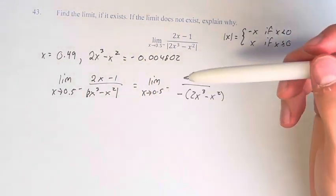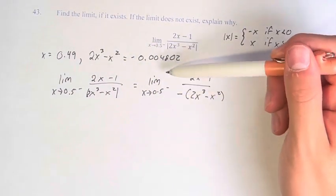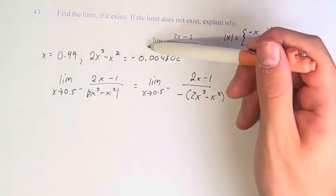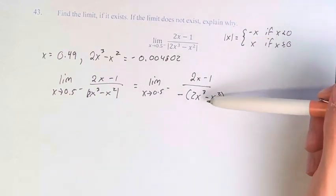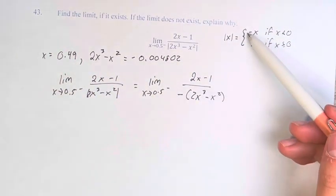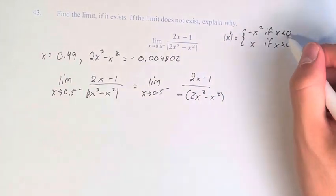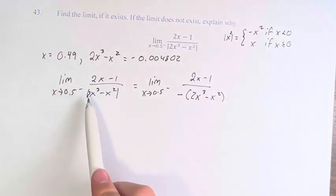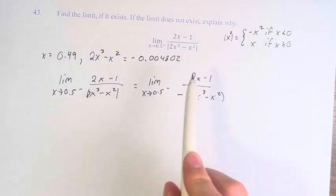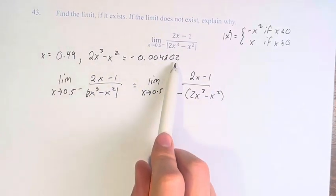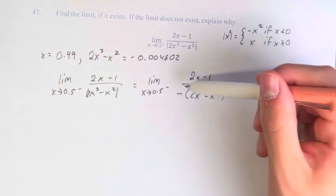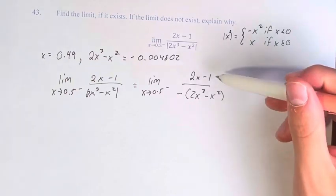If we are approaching from values less than 0, then the absolute value of the thing is equal to negative 1 times that thing. The absolute value of x squared is negative x squared if x is less than 0. The absolute value of 2x cubed minus x squared, if x is less than 0, is negative 2x cubed minus 2x squared, negative that.